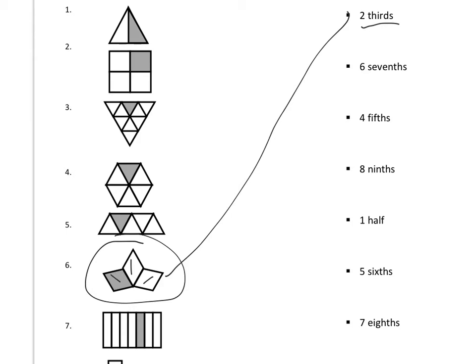Now let's look at this one: six-sevenths. Remember, we're looking for a piece that has seven pieces, and six-sevenths of them are not shaded. Let's see — this one has six pieces, that's not enough. This one has five, not enough. This one has one, two, three, four, five, six, seven. That is seven, and only one-seventh is shaded, which means six-sevenths are not shaded. So we're going to go right there.